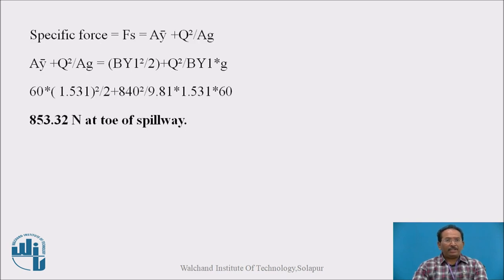Now the important here, that is specific force Fs that we have to calculate. Fs equals area into y bar plus Q square upon Ag. Put these values in this equation, A y bar plus Q square upon Ag. A is width into depth, B into y1 square, because y bar is y1 upon 2, plus Q square as it is upon area, is B y1. Into 1.531, y1 upon 2, plus 840 upon 9.81 into 1.531 into 60. 60 is width. So you will get 853.32 Newtons at toe of the spillway.